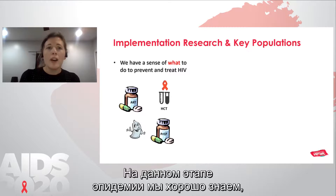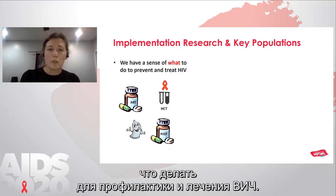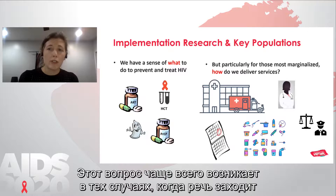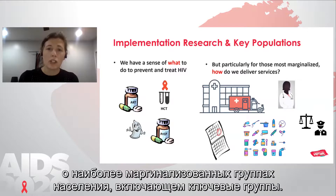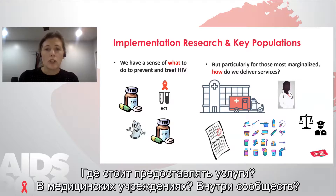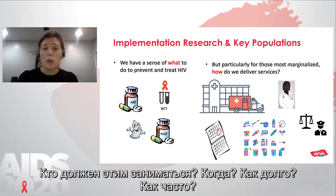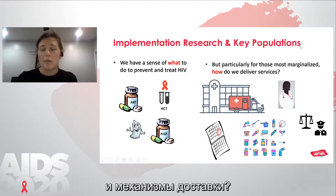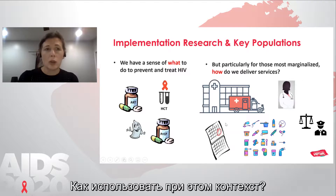At this stage of the epidemic, we have a pretty good sense of what to do to prevent and treat HIV. But increasingly, we're asking ourselves how do we do that best? And this is particularly relevant for those who are most marginalized, such as key populations. Where should services be implemented — at facilities, within the community? By whom? When? For what duration? How frequently? What should the dosage look like? What should the delivery mechanisms be? And how do we integrate context?